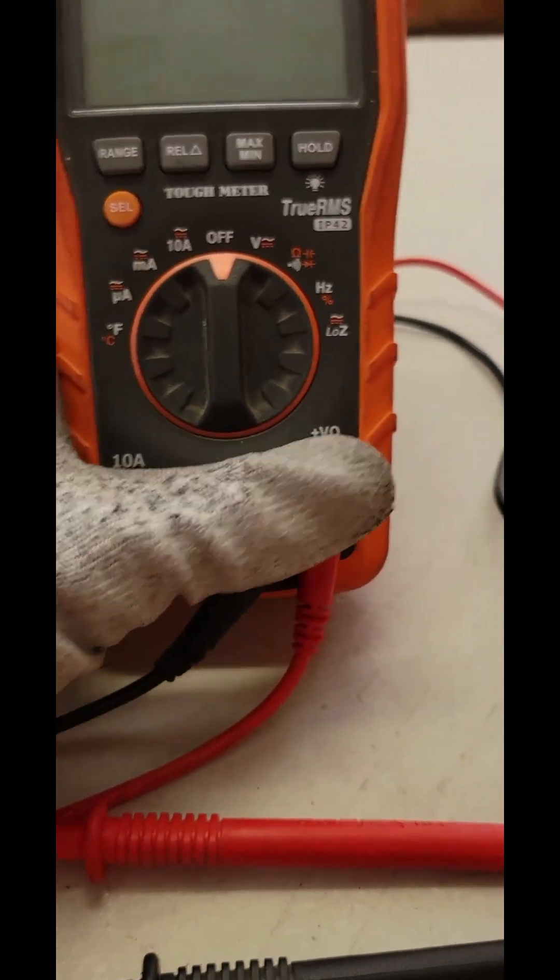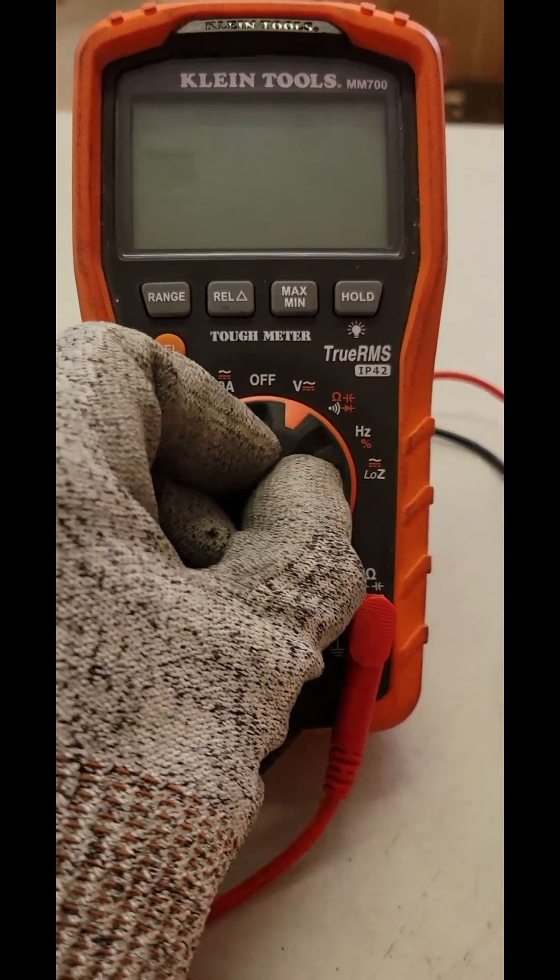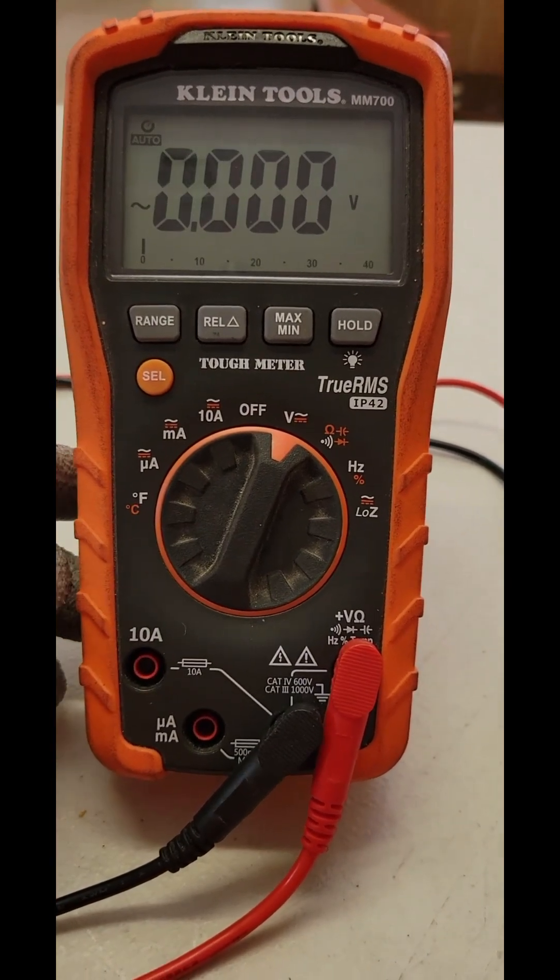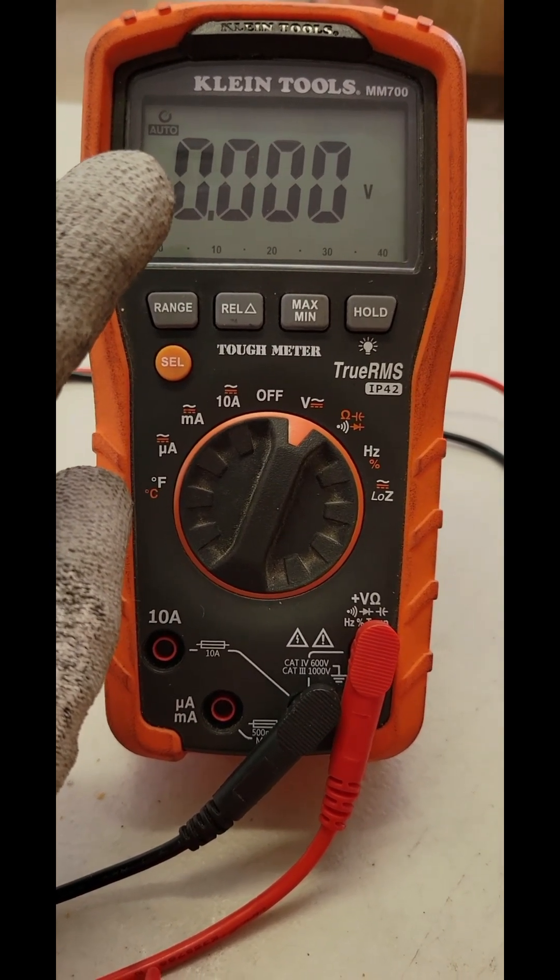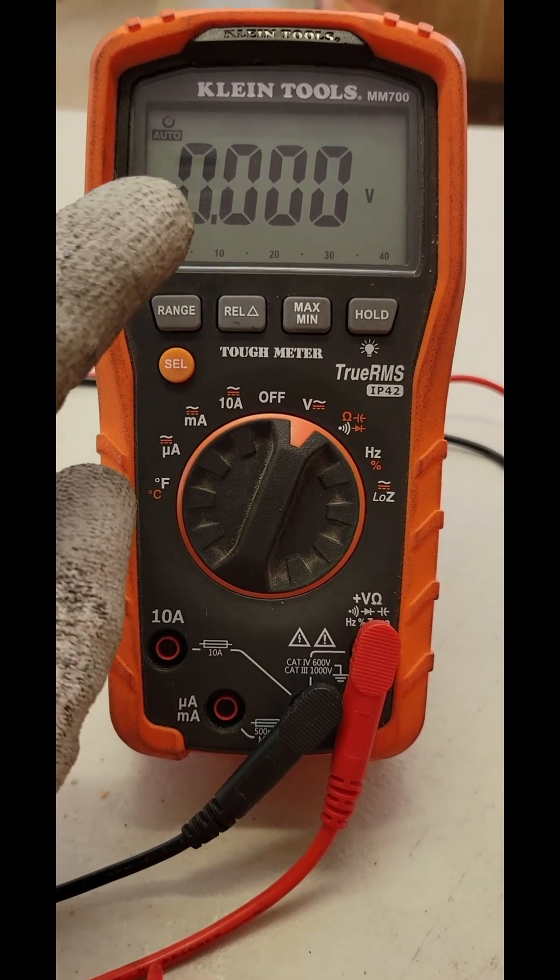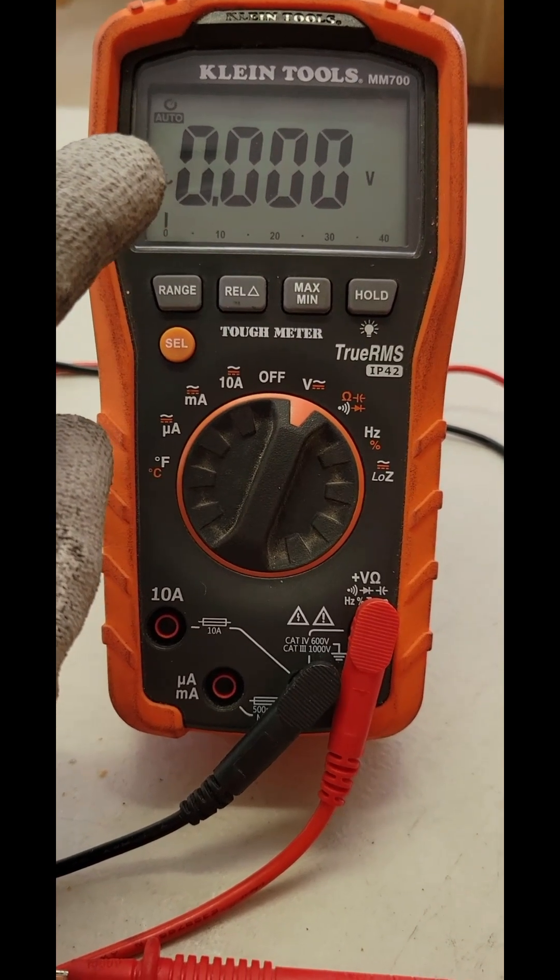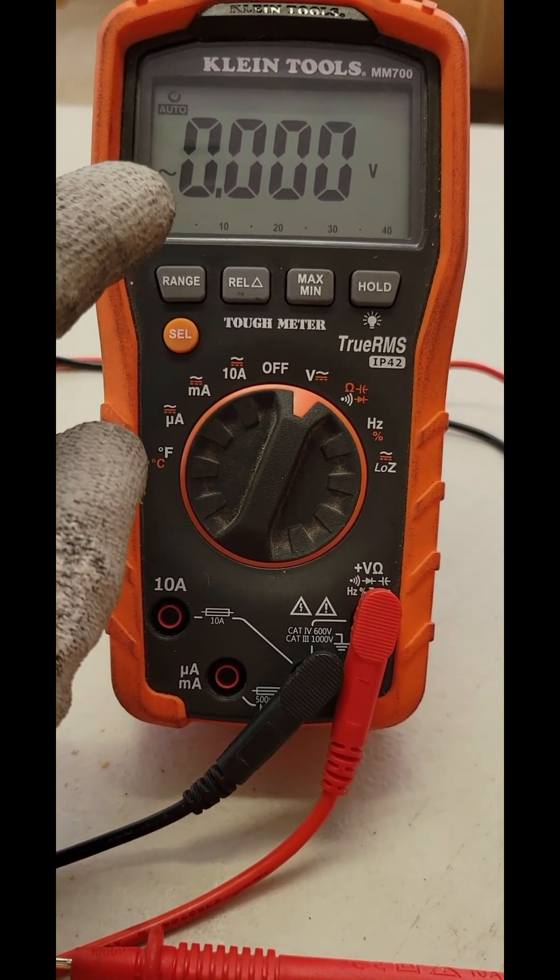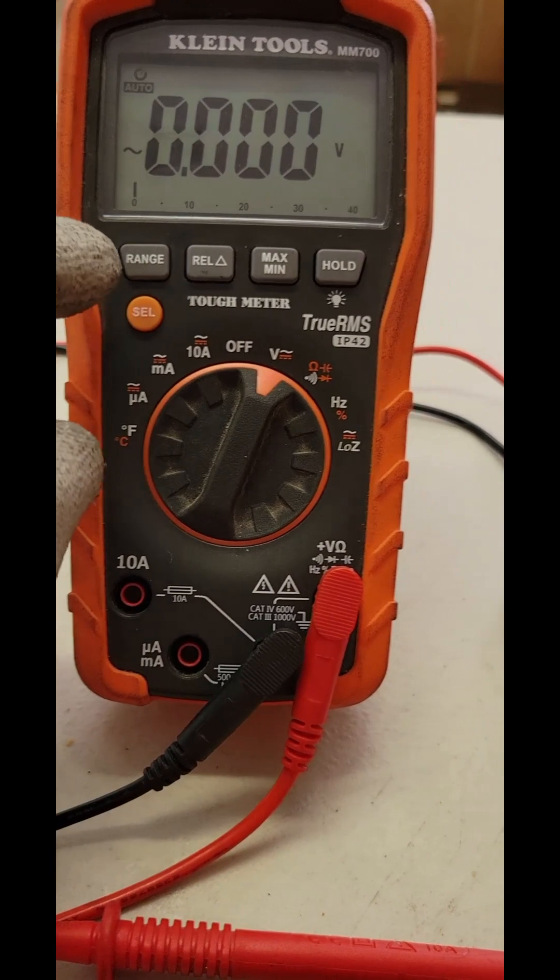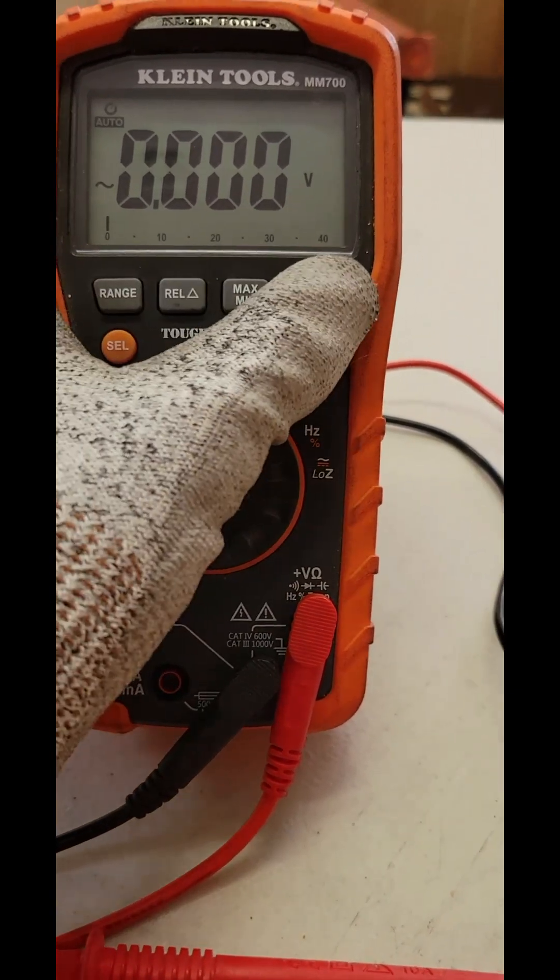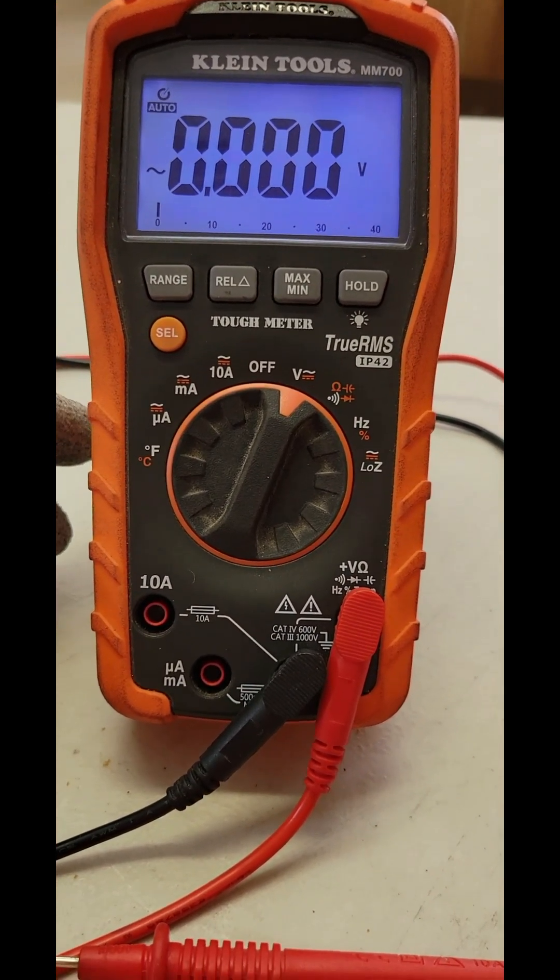Then we can turn our multimeter on. Now with this particular multimeter, you'll see that it says auto, and that means that this is auto-ranging. So it'll automatically sense the voltage or the value of the voltage and adjust itself to the correct range to get an accurate reading. It'll go from millivolts all the way up to volts. You can also, with this particular meter, hold this button and the screen will light up. It's great for testing in low-lit areas.